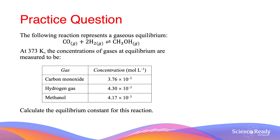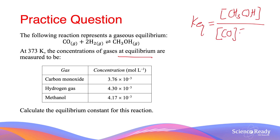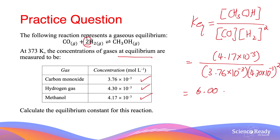Let's look at an example. We have a reaction between carbon monoxide and hydrogen gas, which combine to form methanol. In the table, we are given the concentrations of all three chemicals at equilibrium. The first step is to write the equilibrium constant expression — product concentration divided by reactant concentrations — squaring the concentration of hydrogen gas because of the coefficient of 2. Substituting the given equilibrium concentrations, the equilibrium constant comes out to be 6.00 × 10⁴.